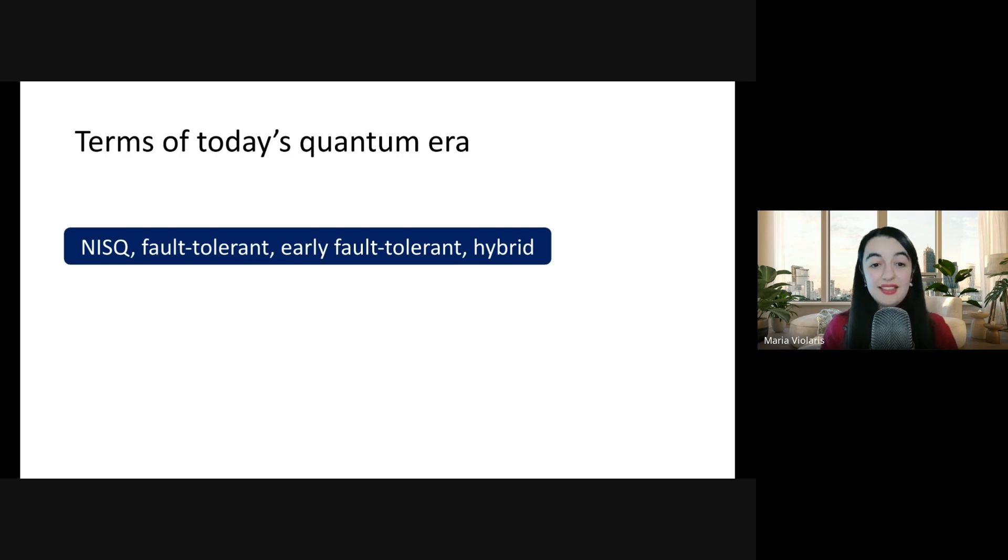Then there's this era of actual fault tolerance, having that fully-fledged low-error quantum computer. And there's something in between called early fault-tolerant, which is thinking about what could we get from quantum computers before reaching this fully fault-tolerant stage, but also using some of the techniques from quantum error correction. Now we're on the verge of entering this era as a community.